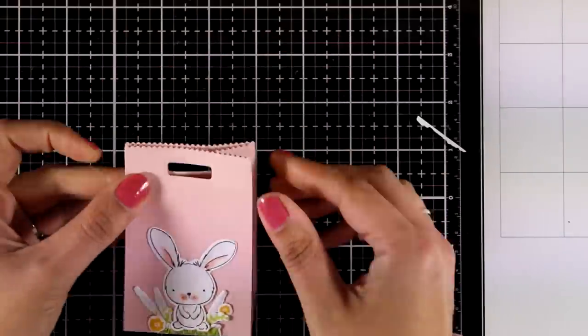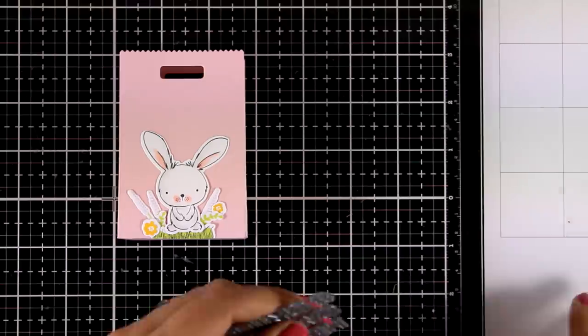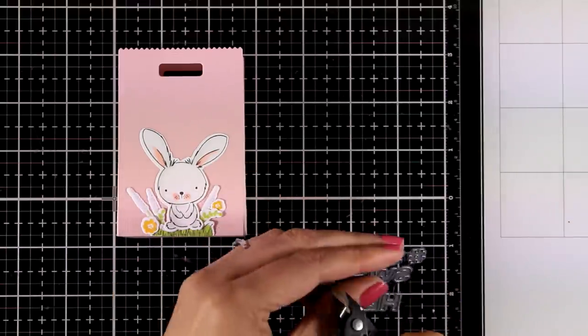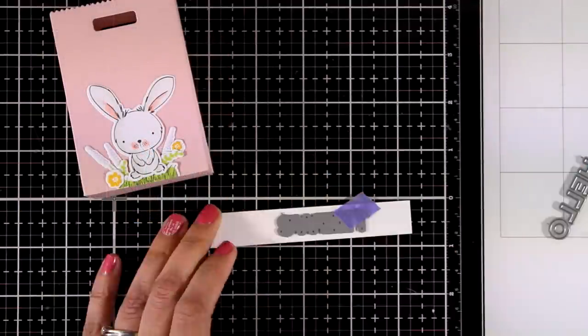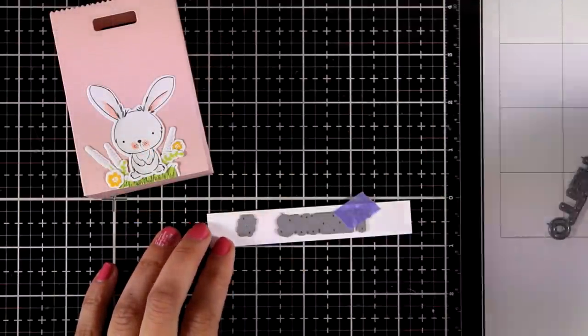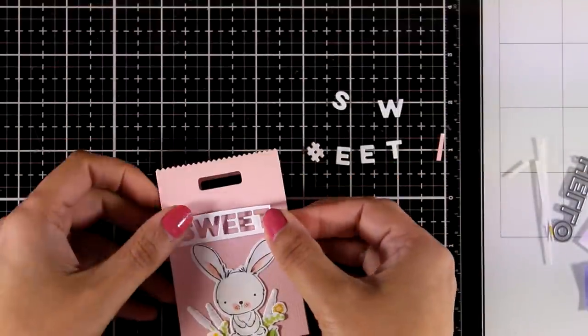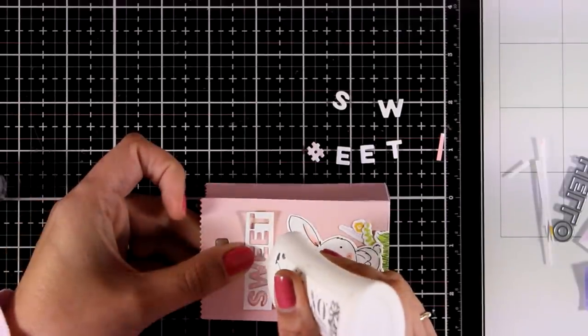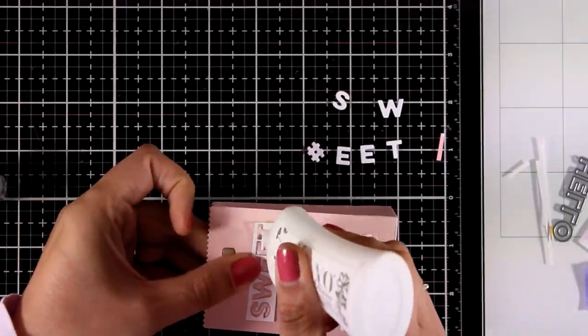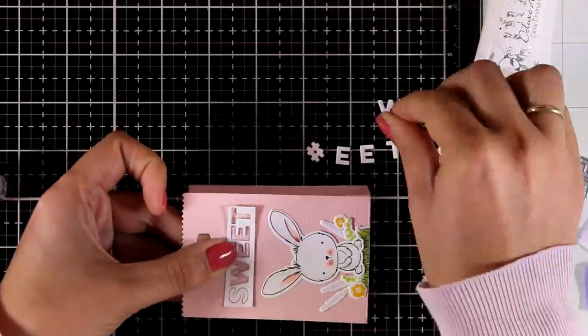You can also hang a little tag with from and to on top. I am going with a new die cut again that is called Hashtag Captions and I'm going to use the one that says sweet. This die cut is one of the new ones and it comes with three sentiments: smile, sweet, and hello, as well as the little hashtag. I was planning to use the hashtag on this bag but you will see that it doesn't fit, so I just went with the word sweet.